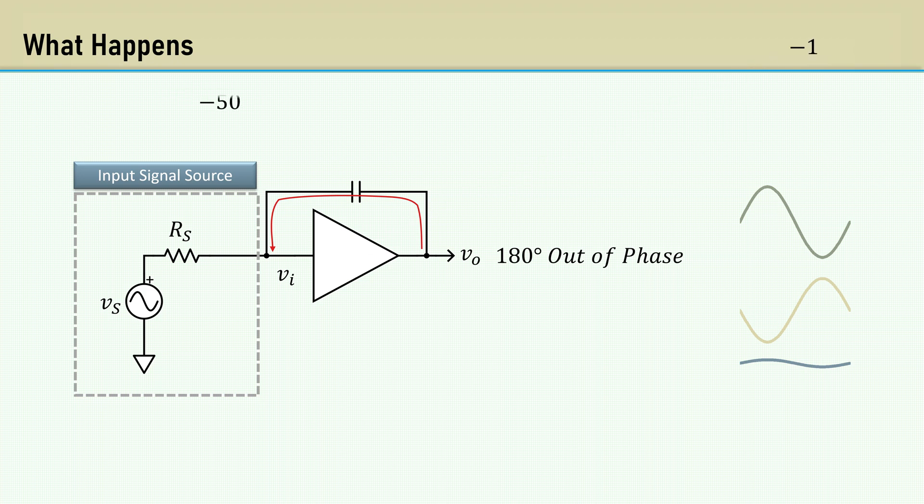Now imagine if the gain is high, like minus 50. There's much more signal available to be fed back, so it takes very little capacitance to result in degenerating the signal. That's why the Miller capacitance is proportional to the gain.